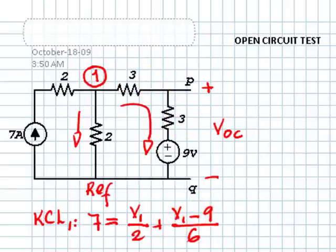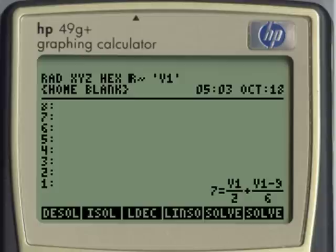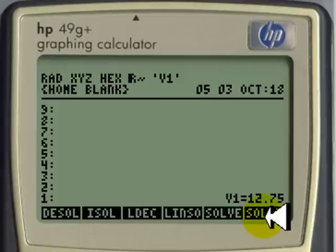That is the equation. I enter that equation, 7 equals V1 divided by 2 plus V1 minus 9 divided by 6. And that is the equation we need to solve. And we solve it, solve that equation. And the answer is 12.75 volts.